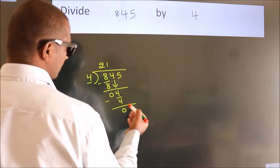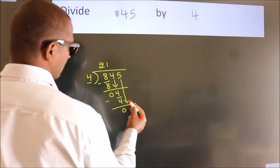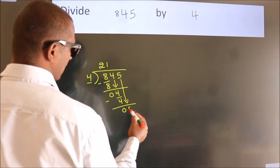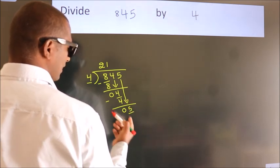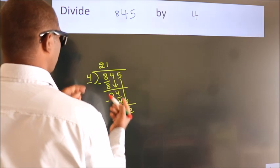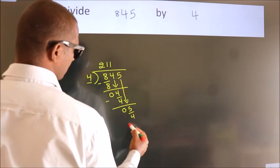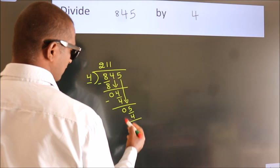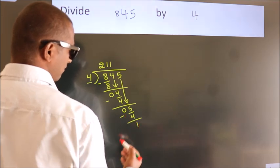After this, bring down the beside number. So 5 down. So 5. A number close to 5. In 4 table is 4 1's 4. Now we subtract. We get 1.